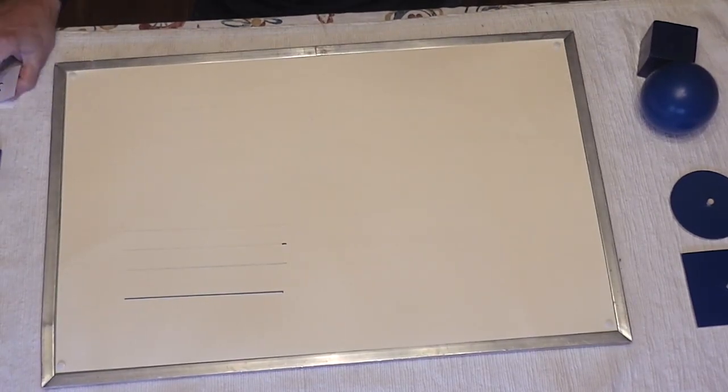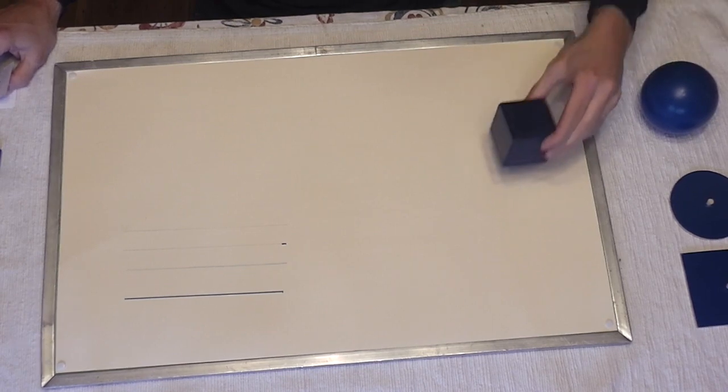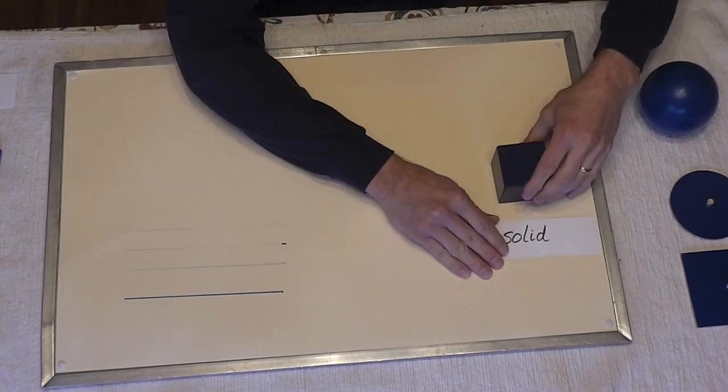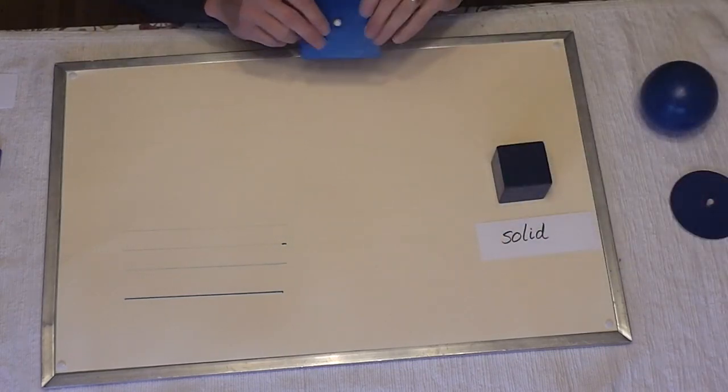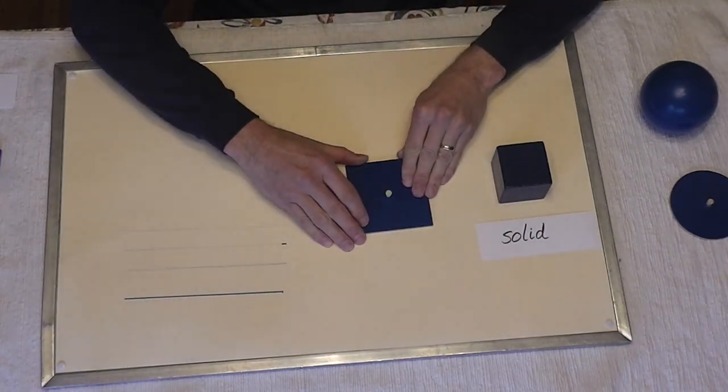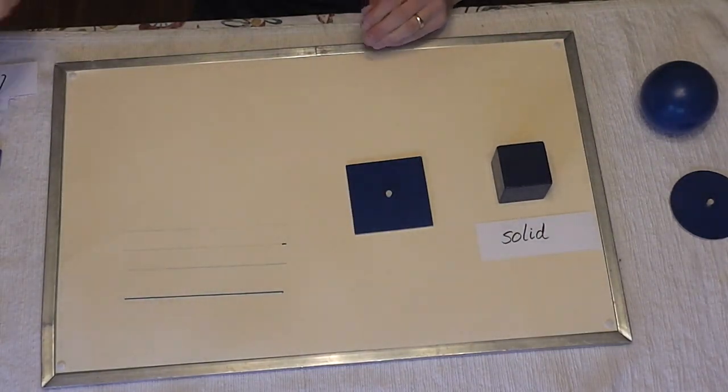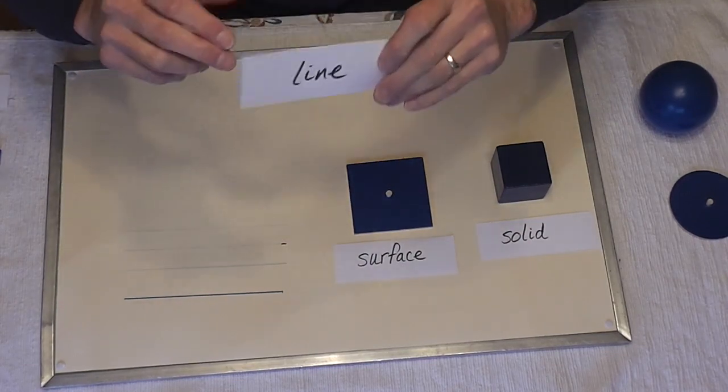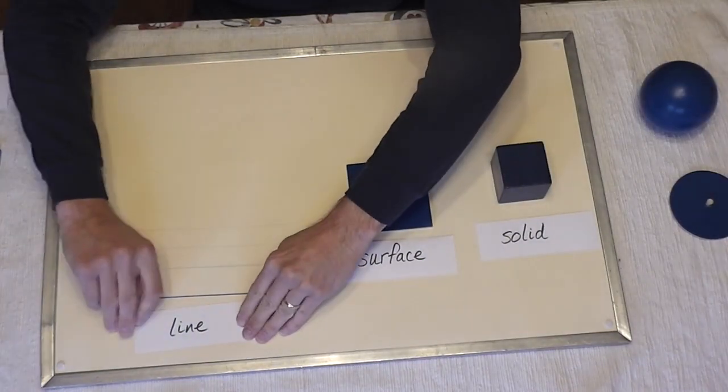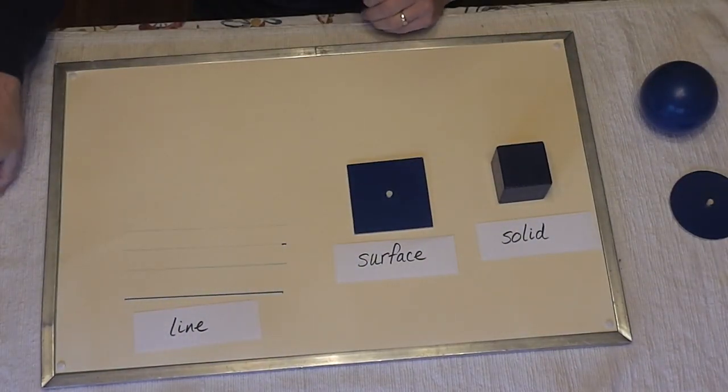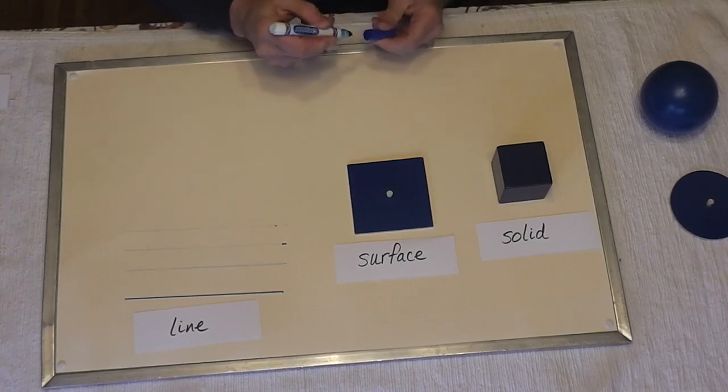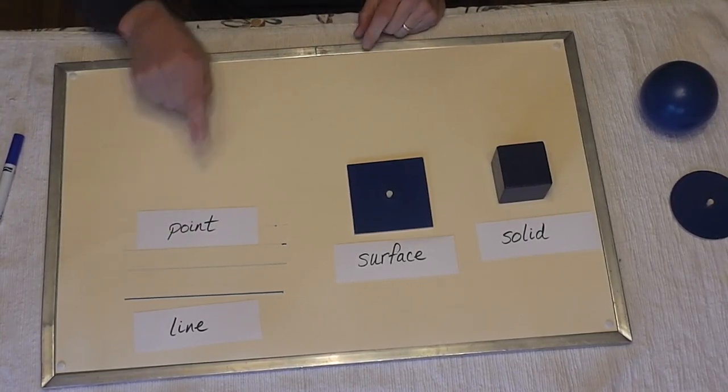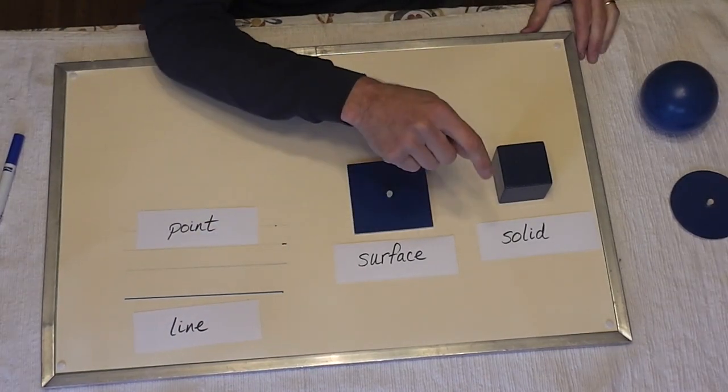Let's go back and just review our terms one more time. We have solid. We have surface. We have a whole bunch of lines, but we have line. And I'll make one all by itself. We have point. Point, line, surface, solid.